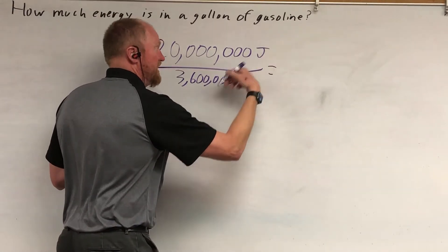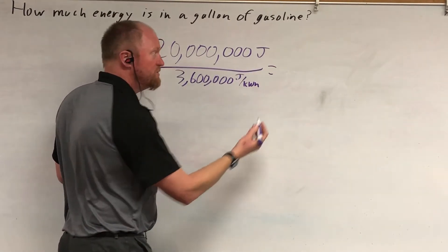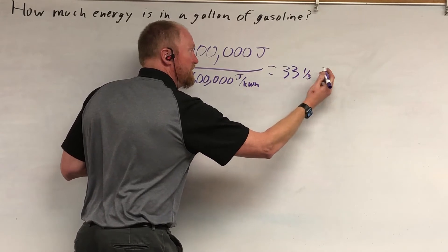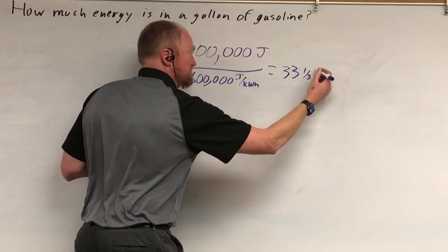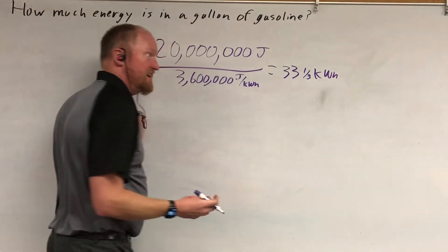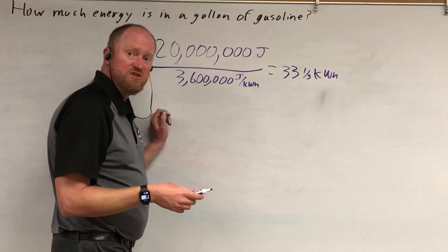So, you divide that, joules cancel each other out, and basically what you find you have, you've got 33 and one-third kilowatt hours in every gallon of gasoline. That's a little more than I use in my house every day.